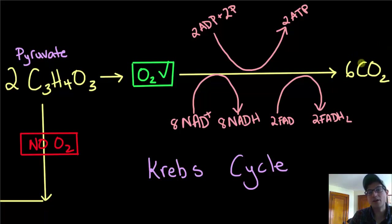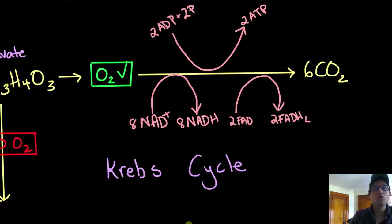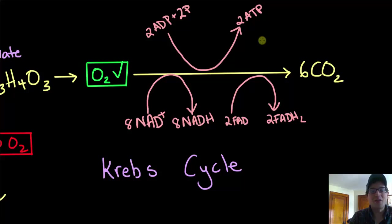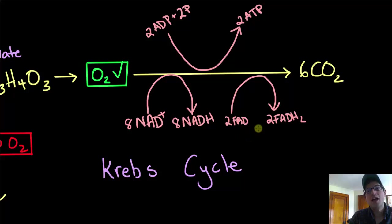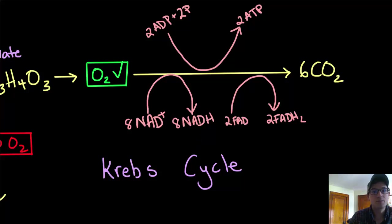Right now, per molecule of glucose, we've accumulated two ATP from glycolysis and two ATP from the Krebs cycle — really not all that much. This wouldn't be enough to keep you alive. The ATP in an average heart muscle cell would be depleted in about six seconds if you weren't able to replace it, and this rate can't replace it fast enough. So this can't be the end of the story. What we really need to look at is what happens to these molecules NADH and FADH2, because these are the molecules that contain most of the energy originally stored in the glucose.